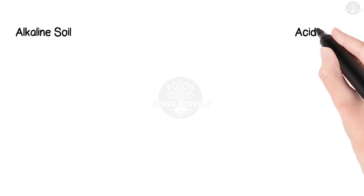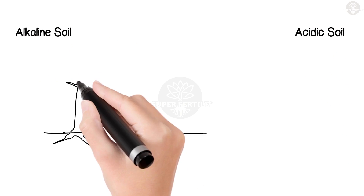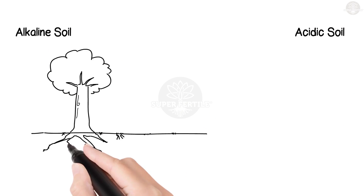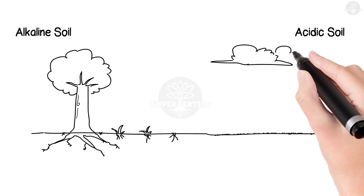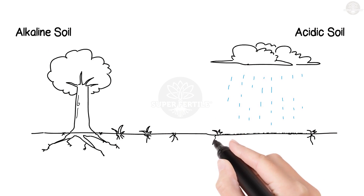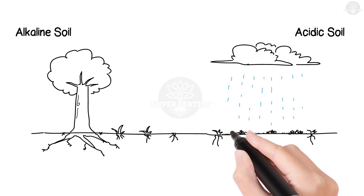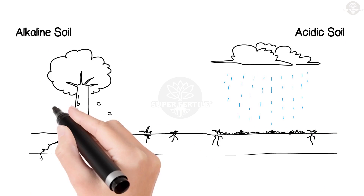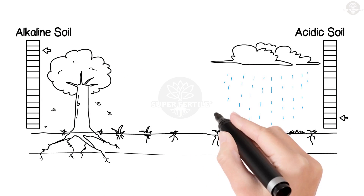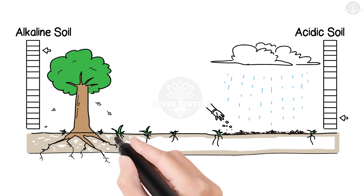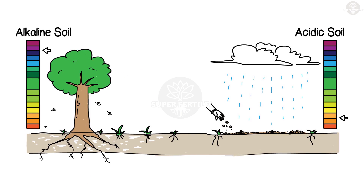Alkaline soil, or higher pH, is typically due to excess calcium carbonate developing in dry environments. Acidic soil, or lower pH, is typically due to fertilizer use, rainfall, and decomposition of organic matter.